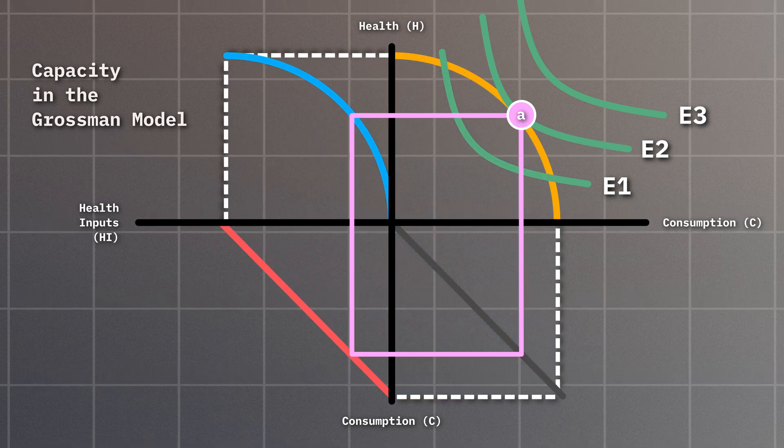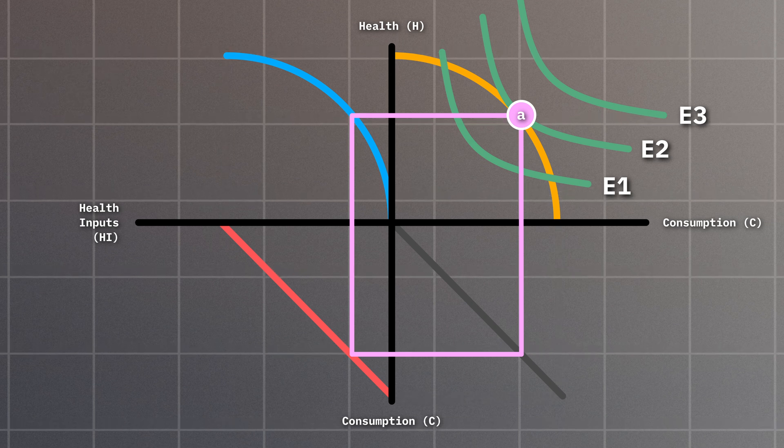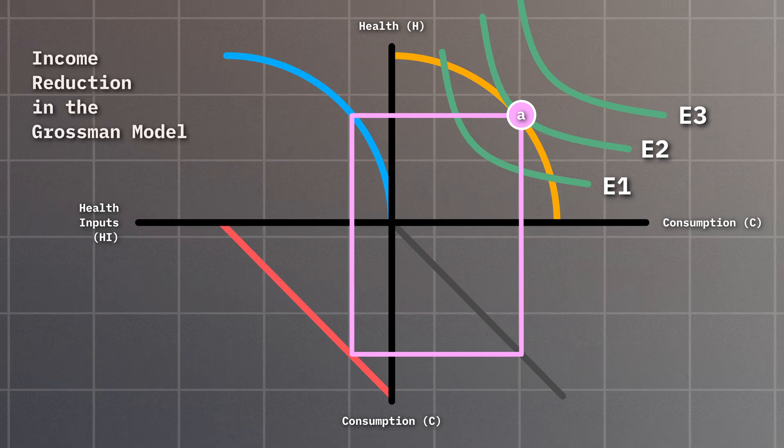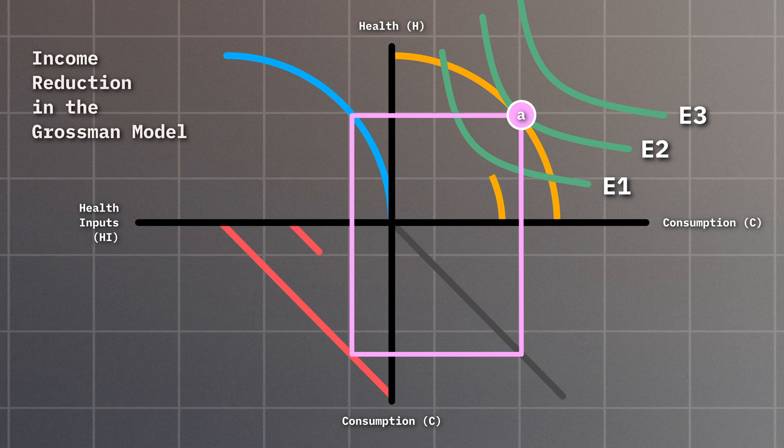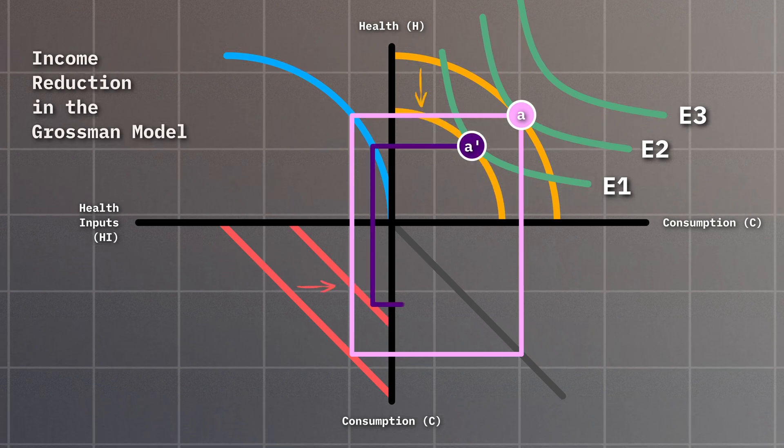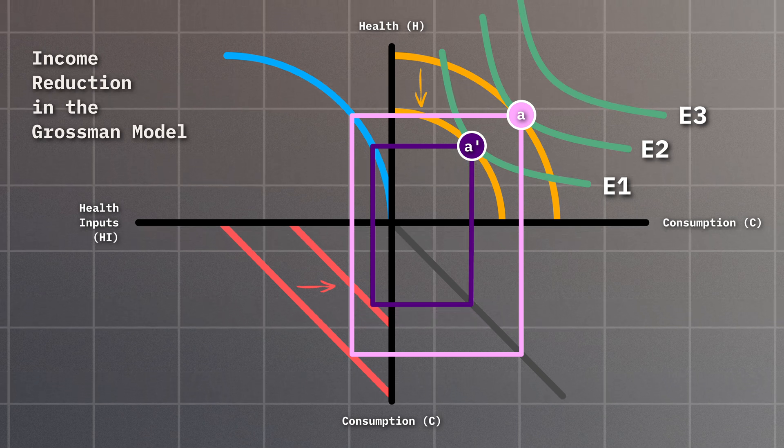Let's look at three scenarios which alter this equilibrium to get more familiar with the Grossman model. First, let's suppose that you experience an income reduction. Maybe you took a job that you like more, but that has worse pay. As a consequence, you can afford less health and consumption, which means that you move from point A to point A prime, as this is the best indifference curve you can achieve now.